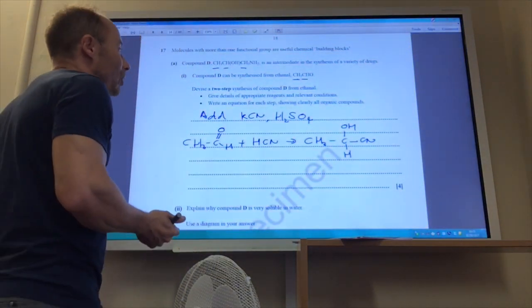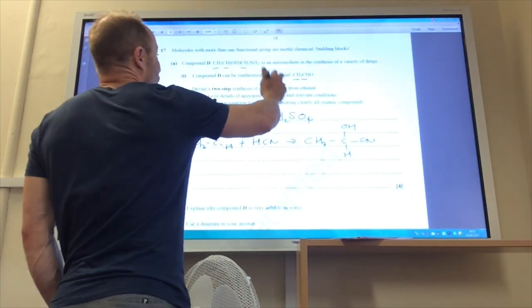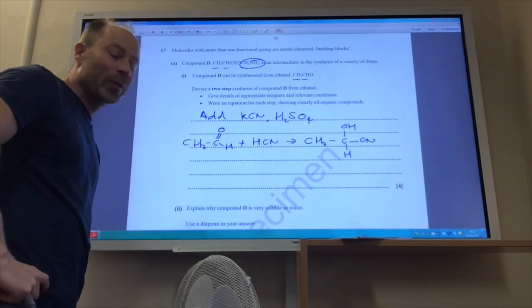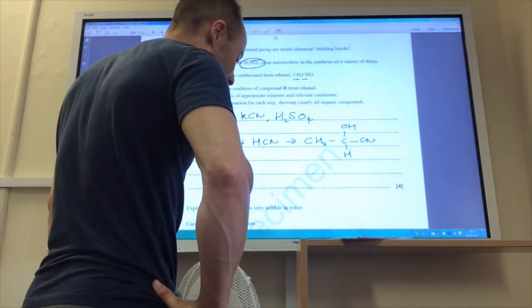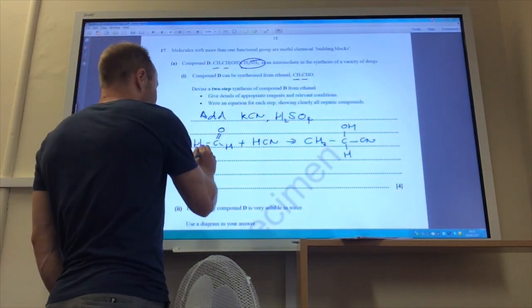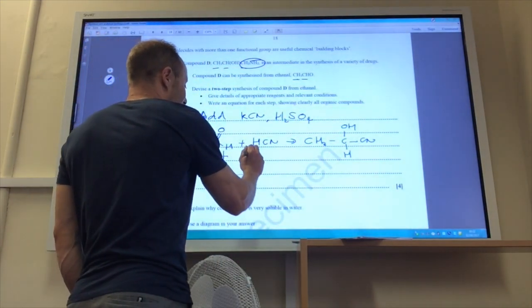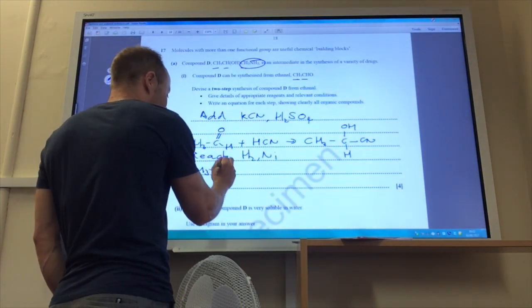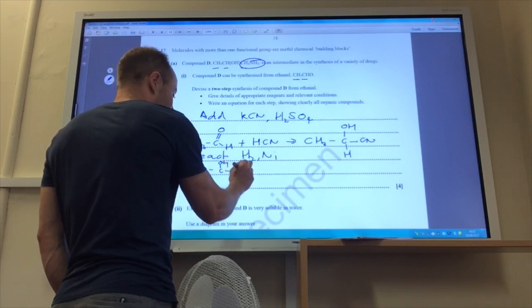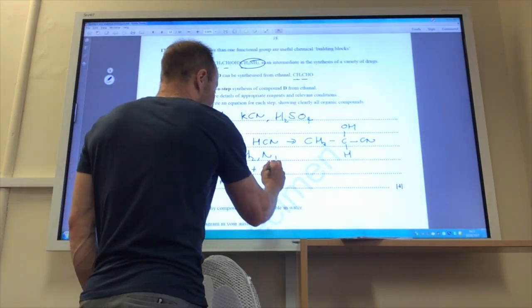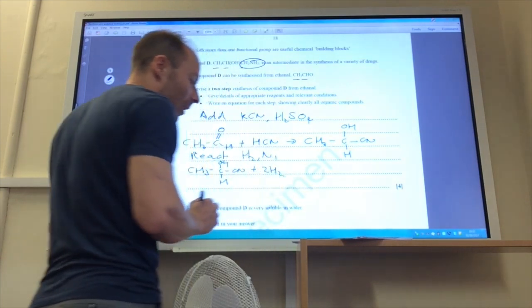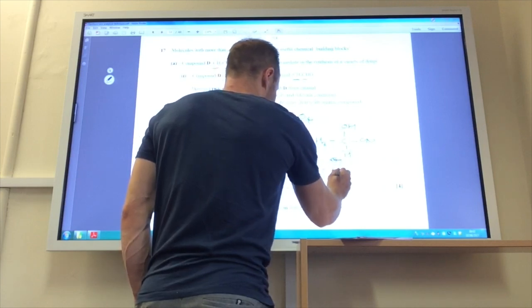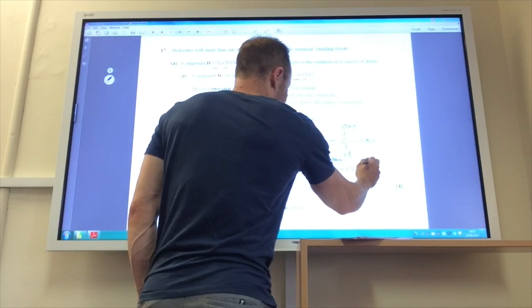You then need to convert this cyanide group into a CH2NH2 group, and if you remember from your functional groups, you do that by adding hydrogen with a nickel catalyst. So you then react with H2 and a nickel catalyst, and the reaction that's going to take place is CH3C like so. And because that's a triple bond, I'm going to add two hydrogens for that to give me my final molecule.